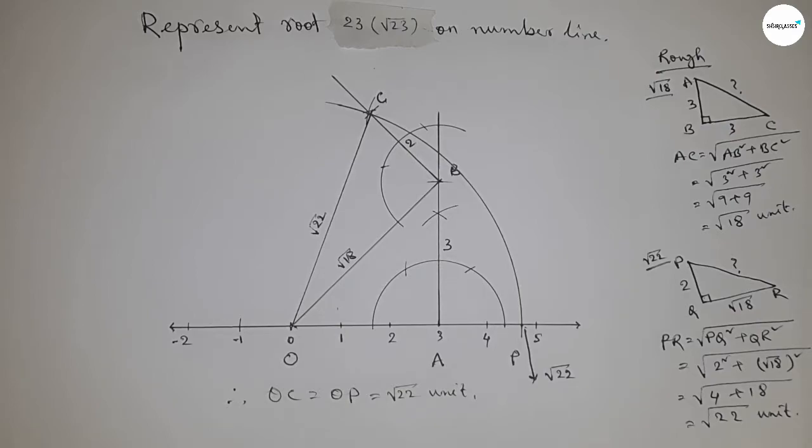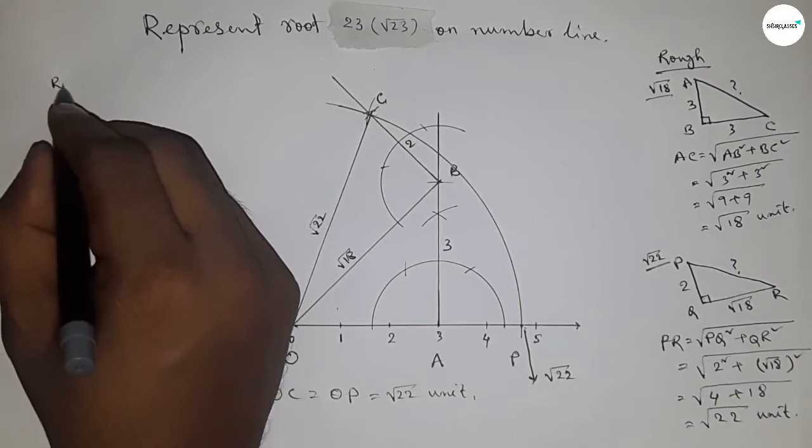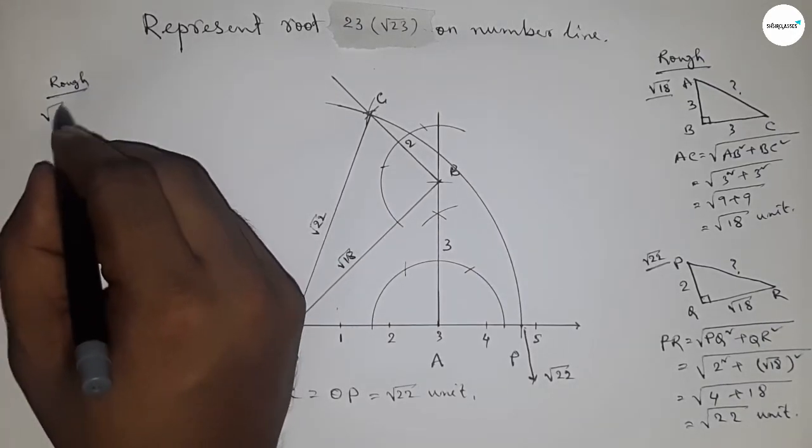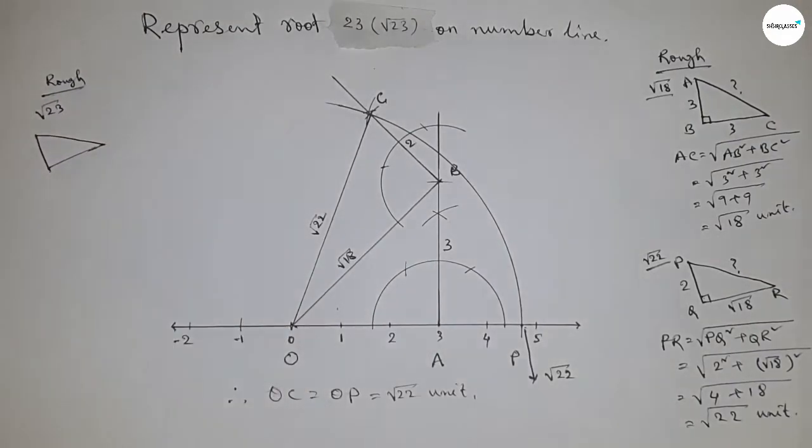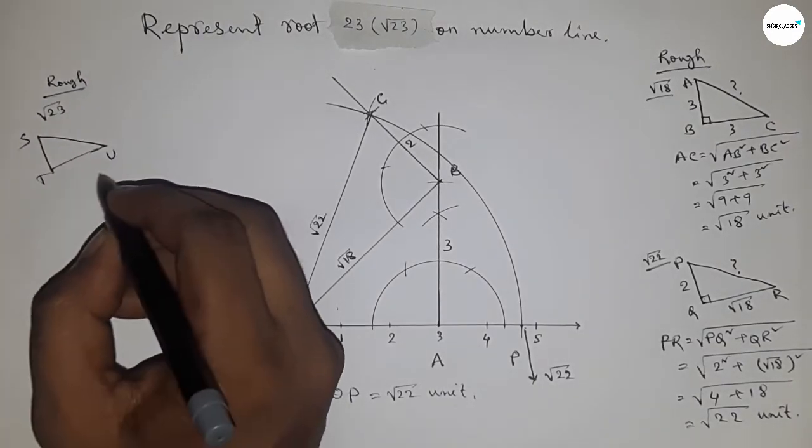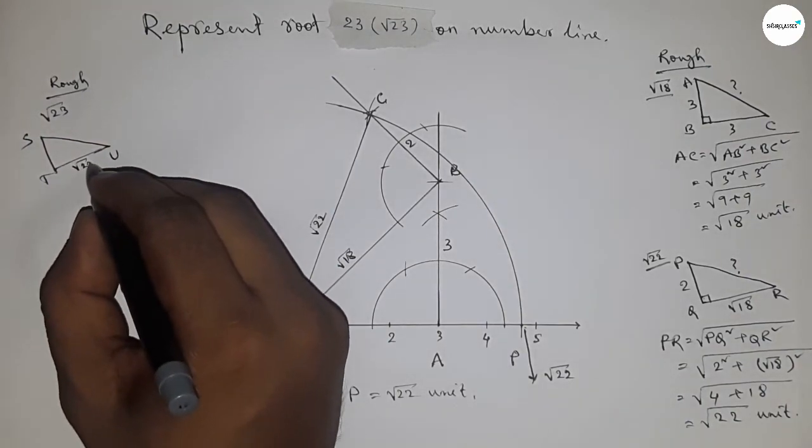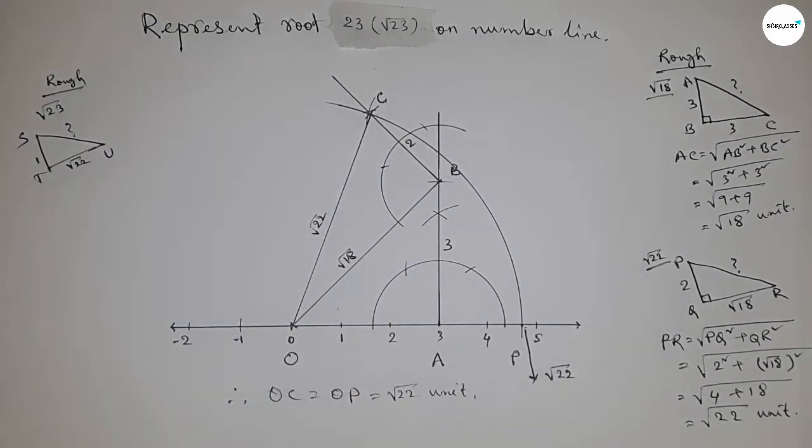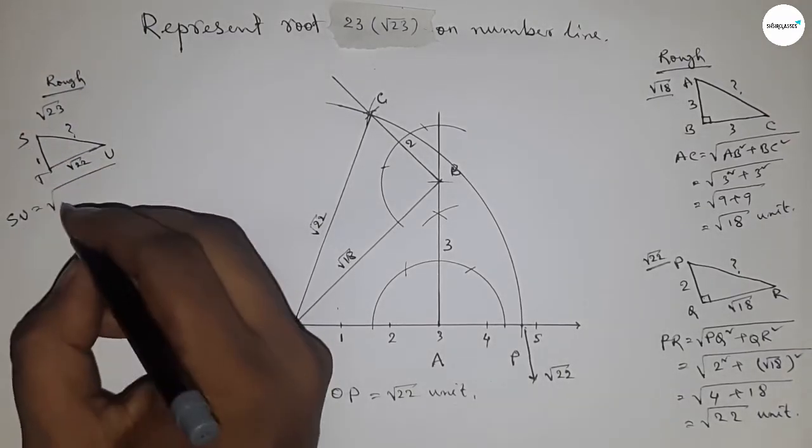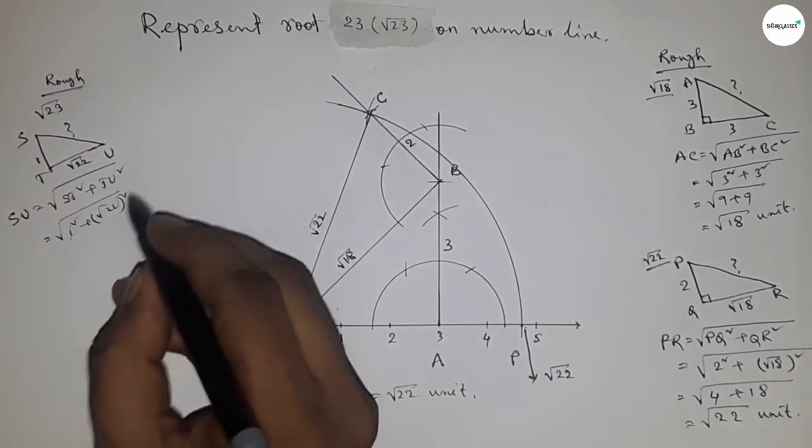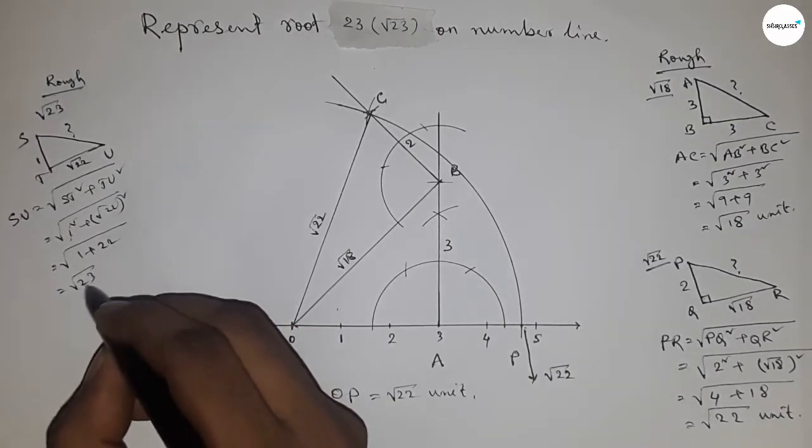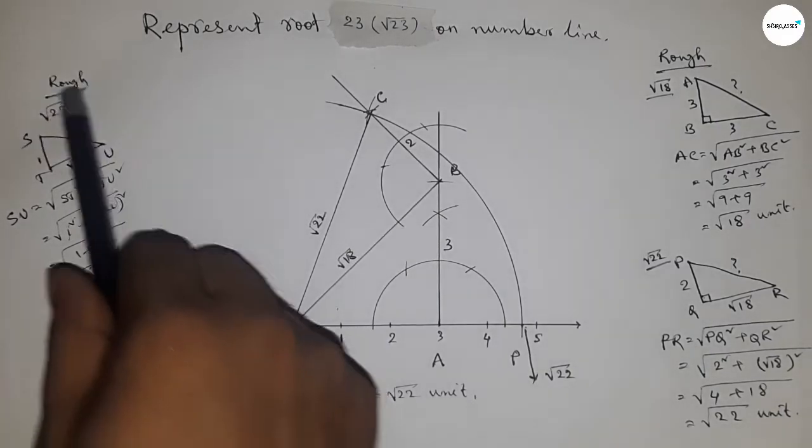Now, roughly discussing the concept about root 23: If there is a right angle triangle STU with base root 22 and height one unit, then what is the hypotenuse SU equal to? By Pythagorean theorem, height squared plus base squared under root, so this is root 23.